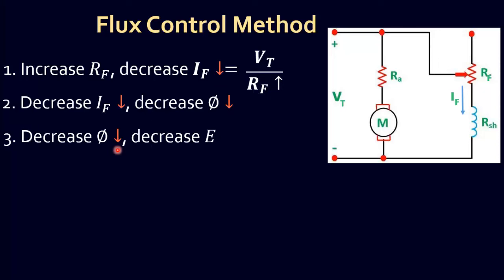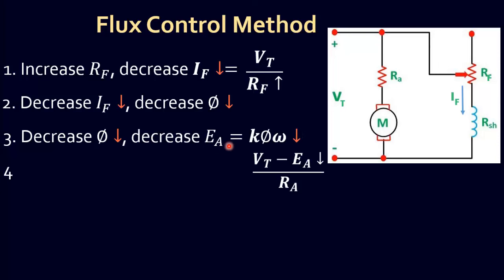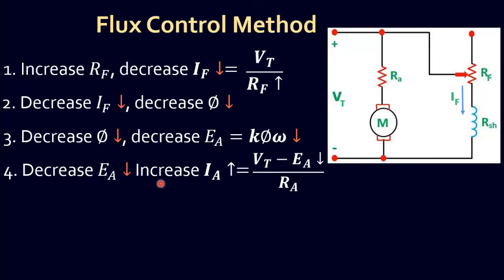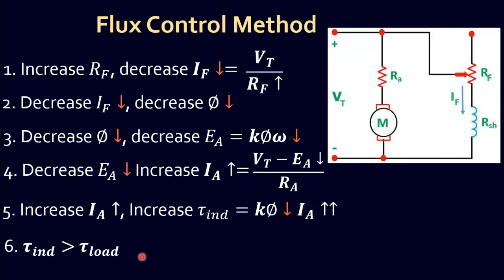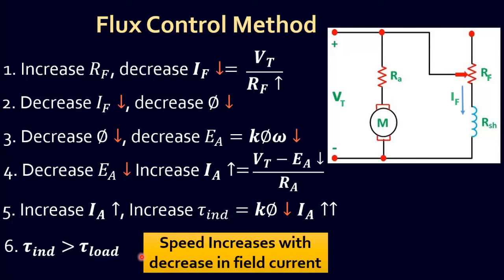As flux is decreased, back EMF is decreased. As back EMF is decreased, armature current is increased according to this equation. As armature current predominates over the decrease in flux, the resultant induced torque is increased. As the induced torque is greater than load torque, the motor speed is also increased. In summary, as field flux or field current is decreased, the motor speed is increased.